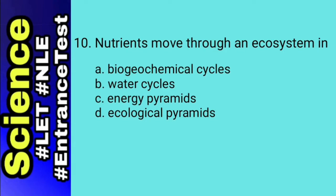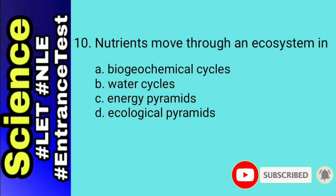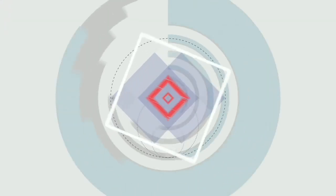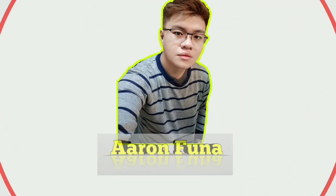We will do elimination for number 10. A while ago, we defined C and D — these are not cycles but ecological pyramids, so we eliminate C and D. We are left with choices A and B. The water cycle is the continuous movement between the oceans, the atmosphere, and land — sometimes outside living organisms, and sometimes inside them. Our answer is letter A, biogeochemical cycle. Nutrients are recycled through biogeochemical cycles.